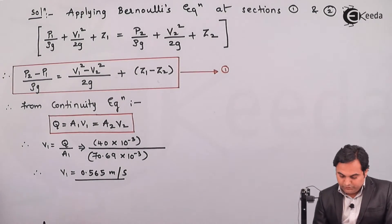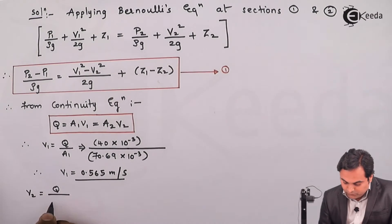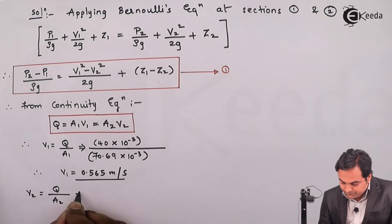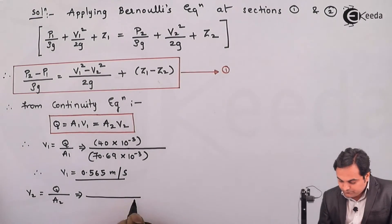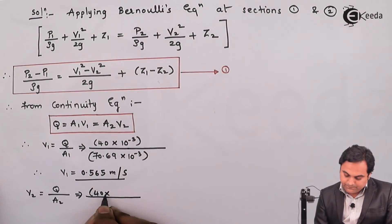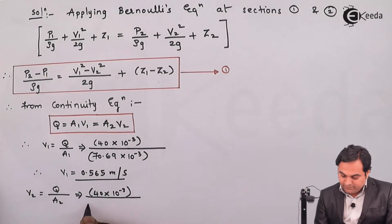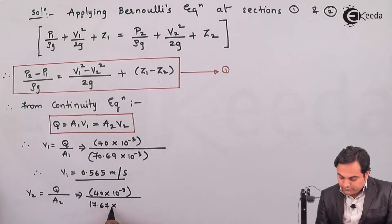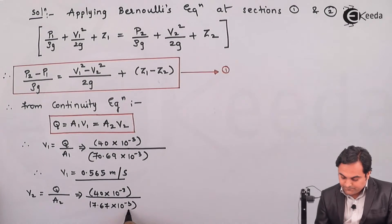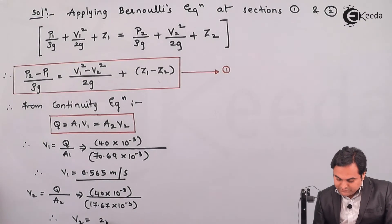Similarly I'll get V2, Q upon area 2. Here the discharge is again 40 into 10 raise to minus 3. Area 2 is 17.67 into 10 raise to minus 3. So V2 will be 2.26 meter per second.